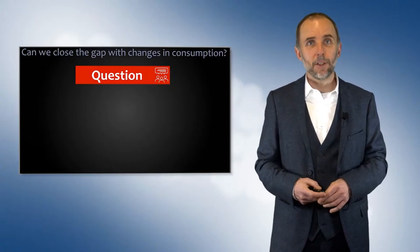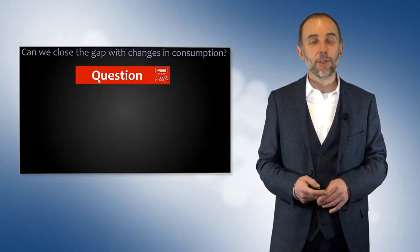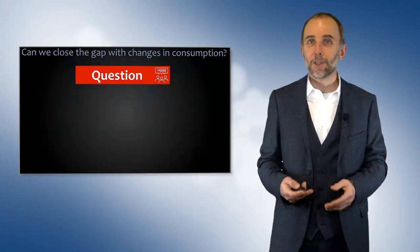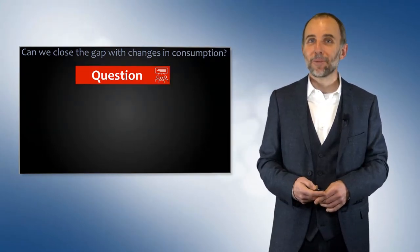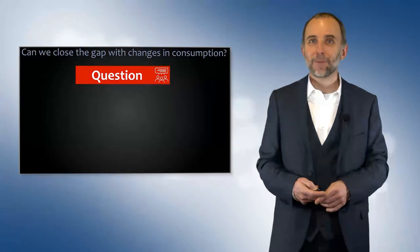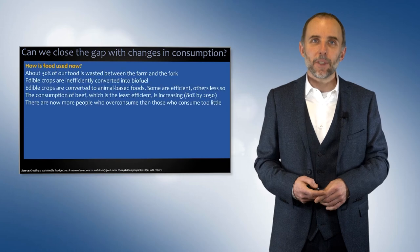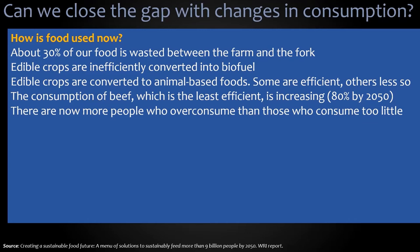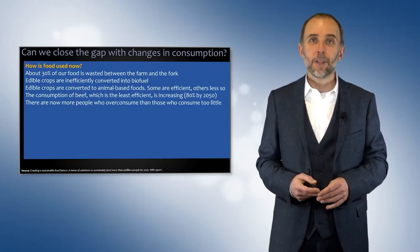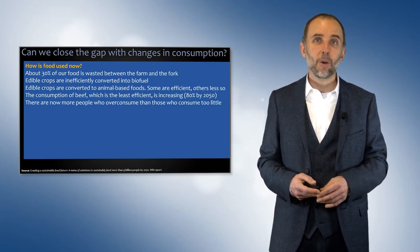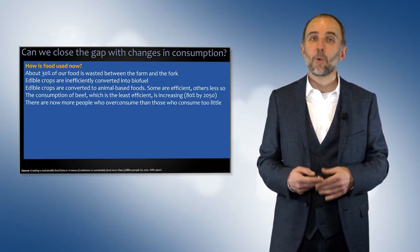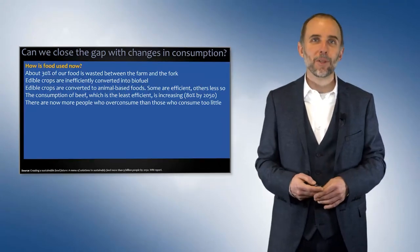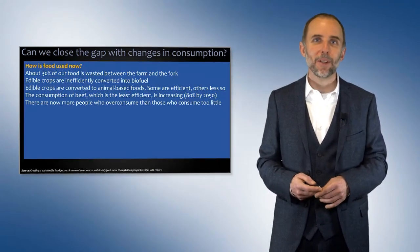Now we can look at the other side of the equation: can we close the gap with changes in our consumption? Let's start with how our food is used now. About 30% of our food is wasted between the farm and the fork — whether it's in the processing, the transportation, or our wastage at home. This all adds up to about 30%, which is a huge amount of resources that we're just not using efficiently.